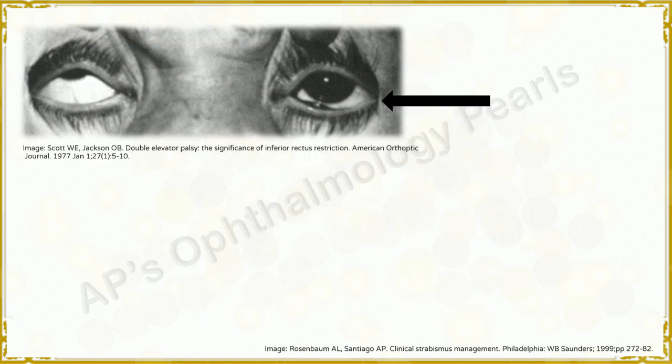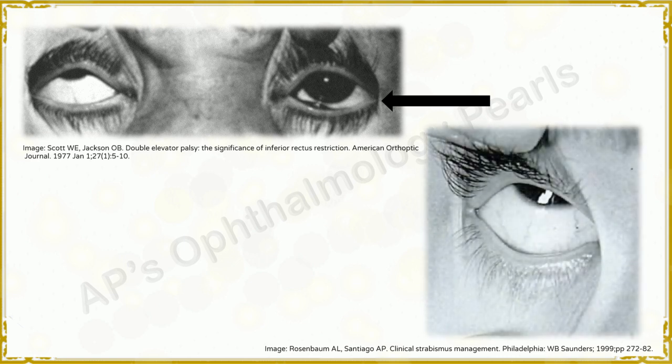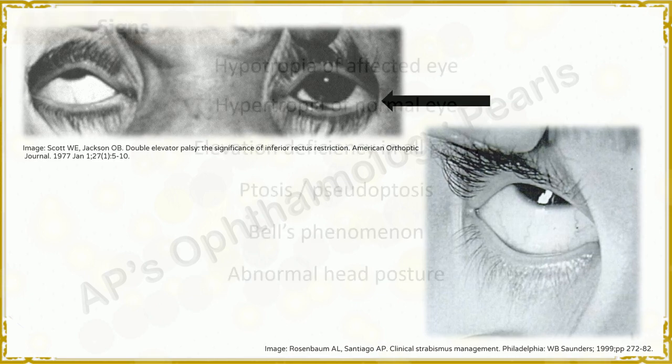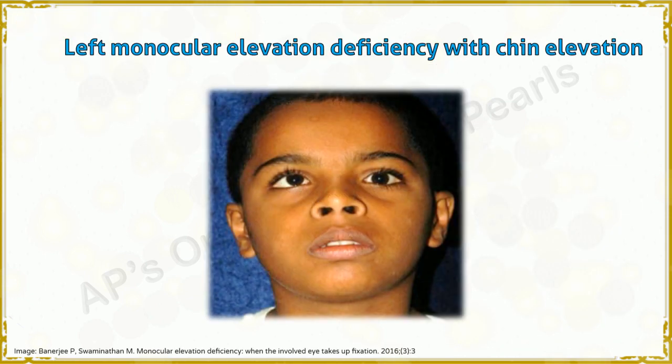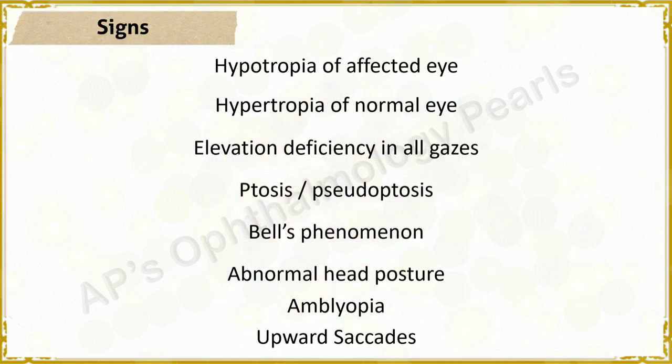Bell's phenomenon is absent in Type 1 and Type 2, but present in the supranuclear etiologies. An abnormal head posture, if present, is in the form of chin elevation and indicates binocular fusion or fixation with the affected eye. Abnormal head posture is absent if there is orthotropia in primary gaze or if the affected eye is amblyopic. Amblyopia is common in the congenital variety and so diplopia is not common; however, bothersome vertical diplopia is common in the acquired variety.